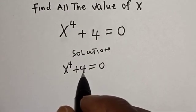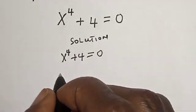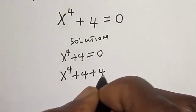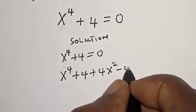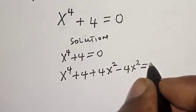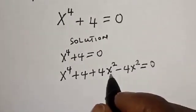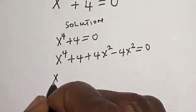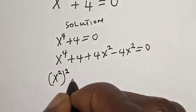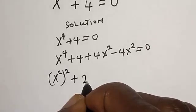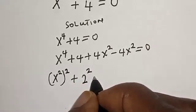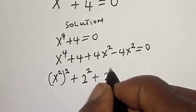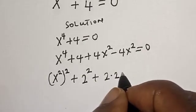Let's try to manipulate this by adding and subtracting 4s² from the equation, that is s⁴ plus 4 plus 4s² minus 4s² is equal to 0. If you look at this, this does not formally change the equation. Then this is (s²)² plus 4, which is 2², plus 2 times 2 multiplied by s².